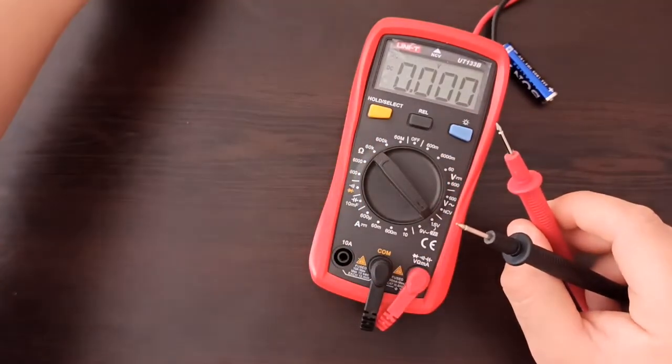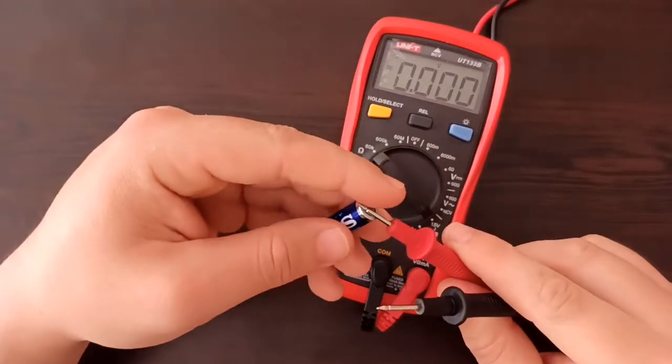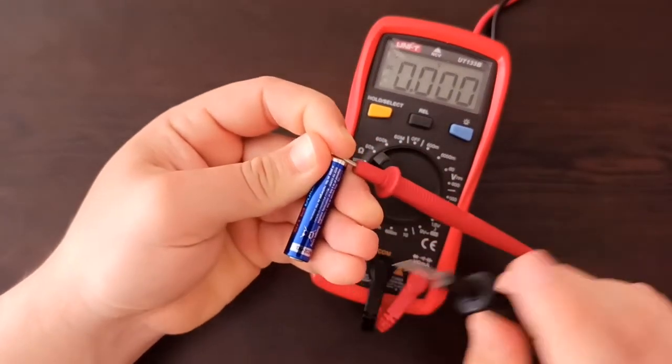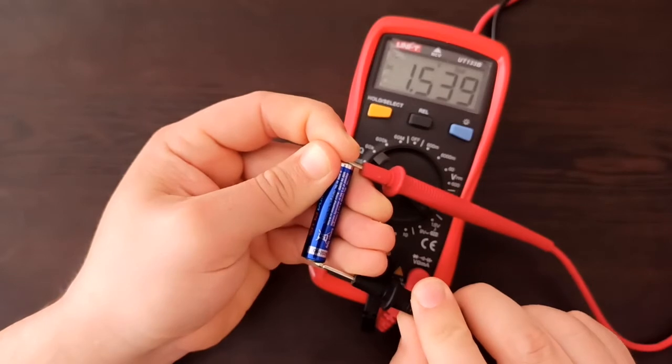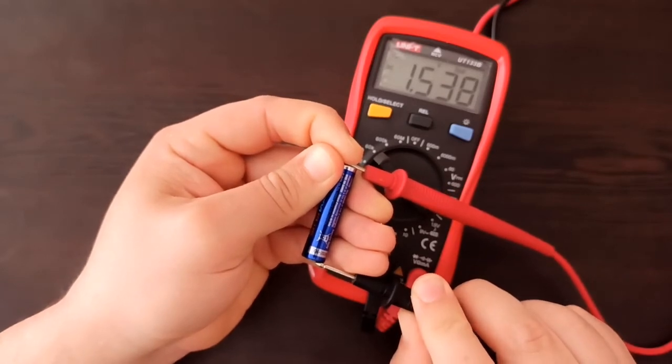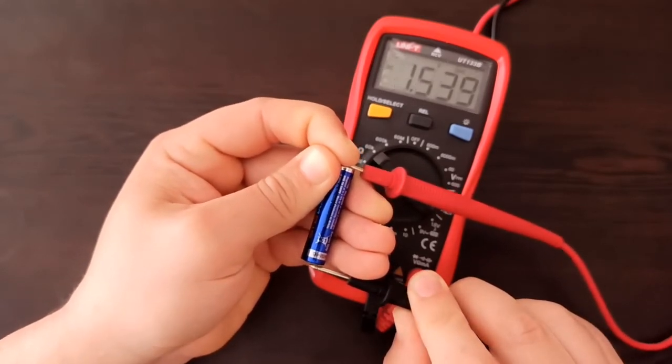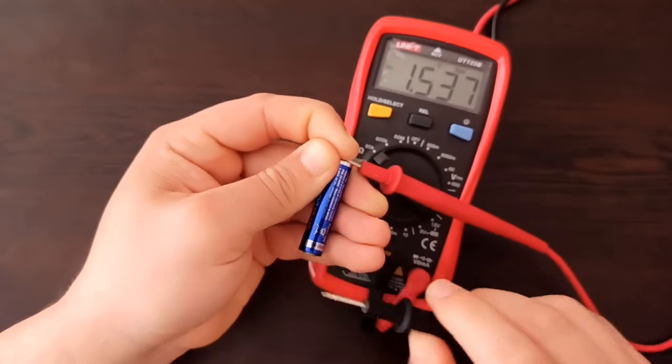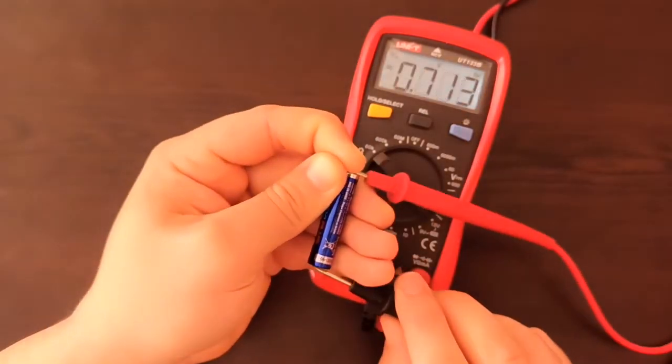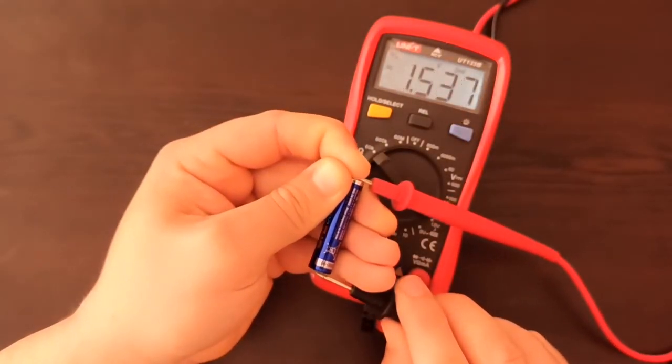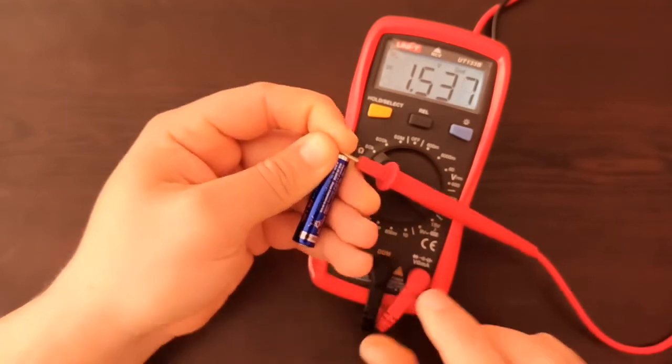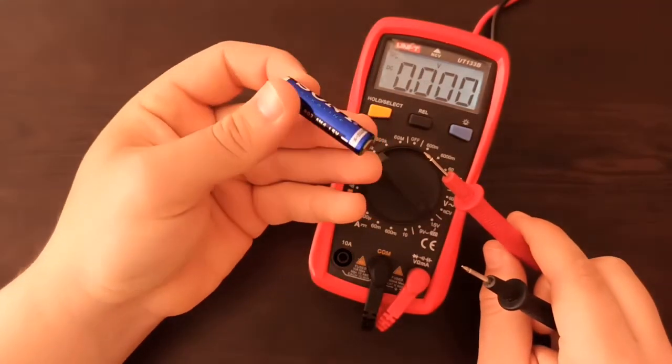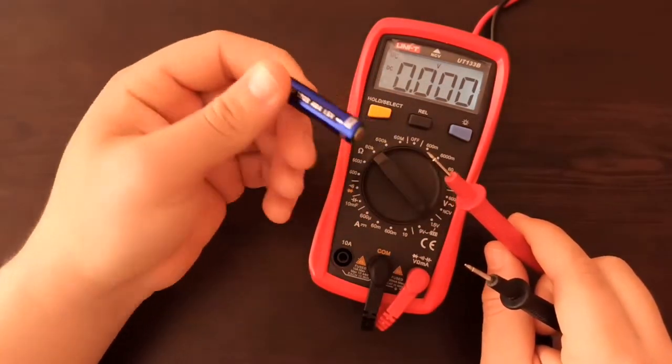Here I have another battery that's actually good—it's a new battery showing more than 1.5 volts. Since I'm losing the connection... okay, now it's good. On the display it's showing 'good,' so you can see better. This is a new battery, it's fine, it's charged, and it's ready to use.